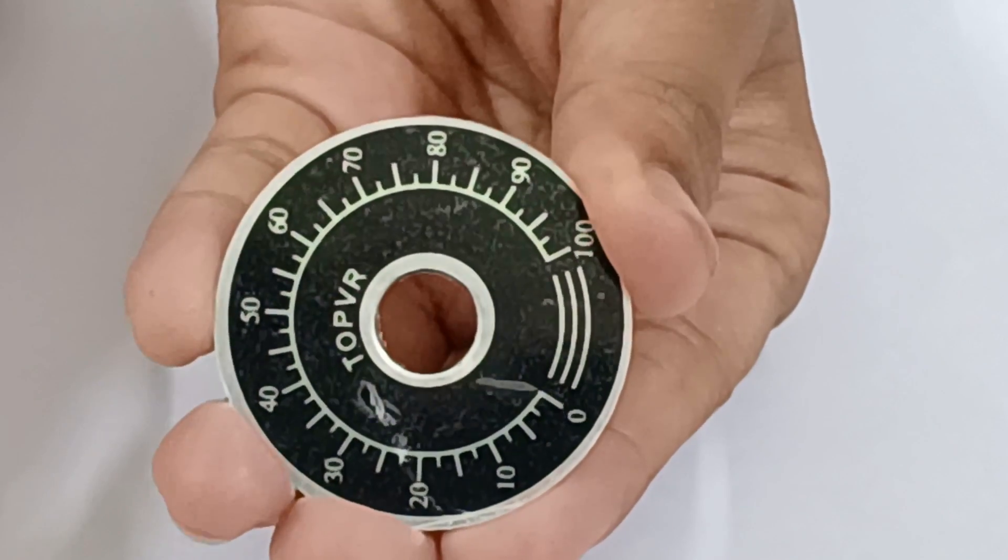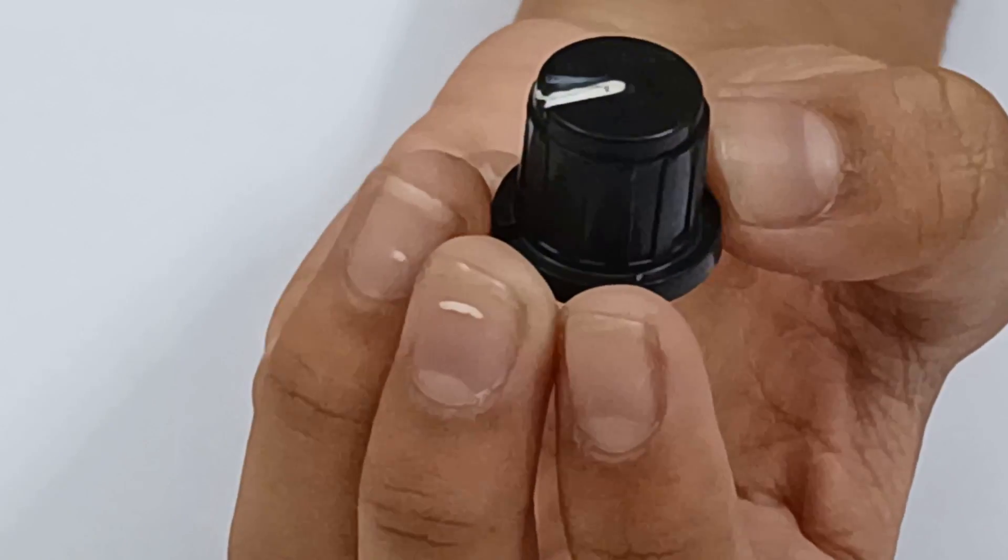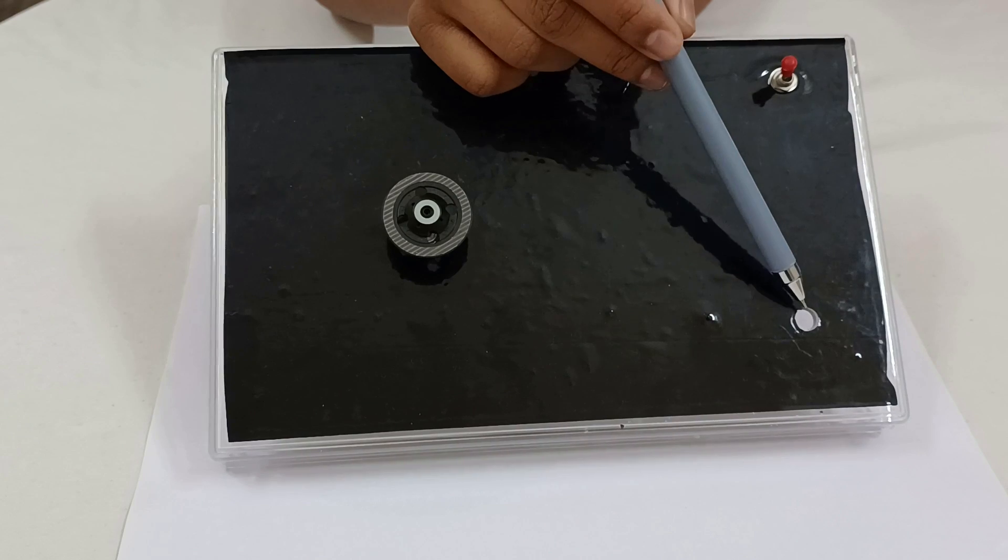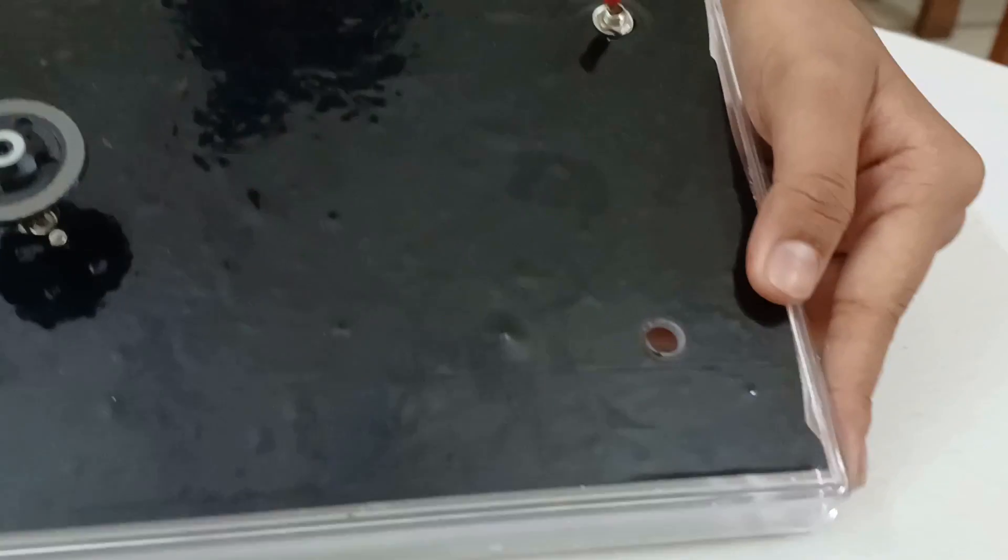Next we need a measuring dial for potentiometer. Next we need a knob to turn potentiometer. Now look at this, I have made one more hole for potentiometer. Now let's fit the potentiometer.